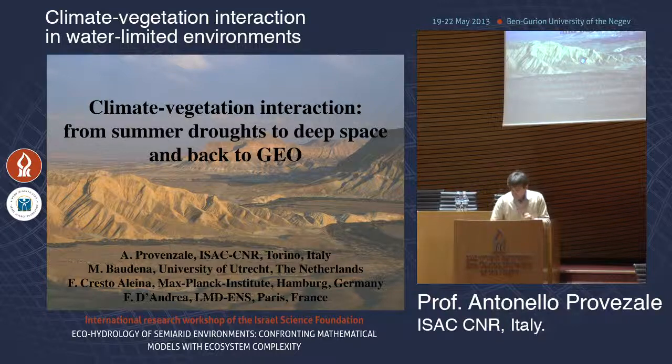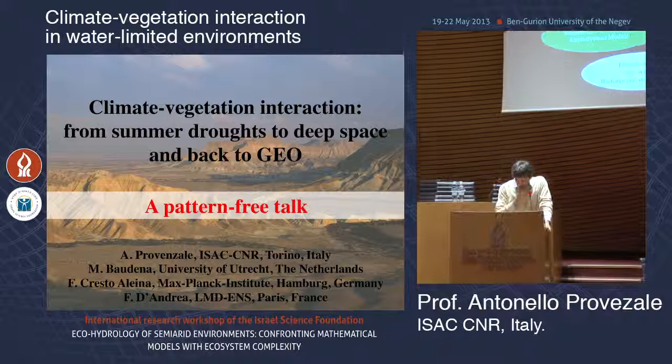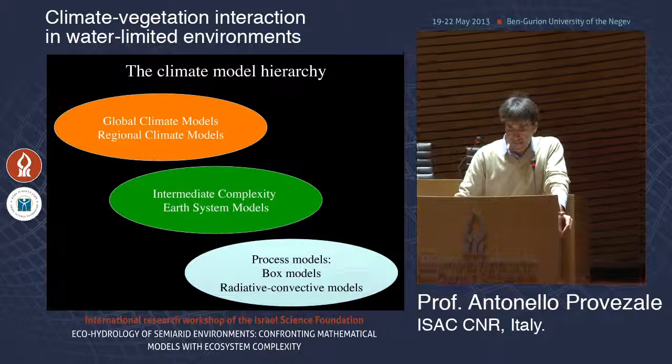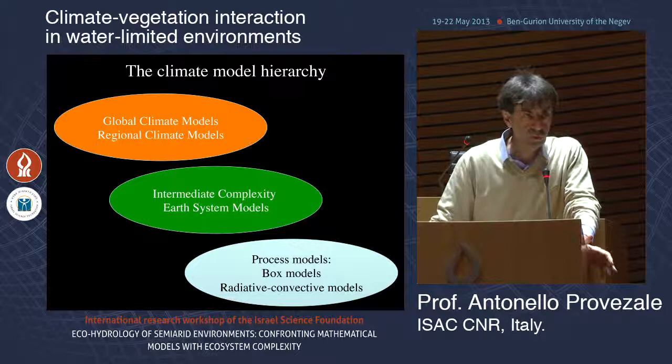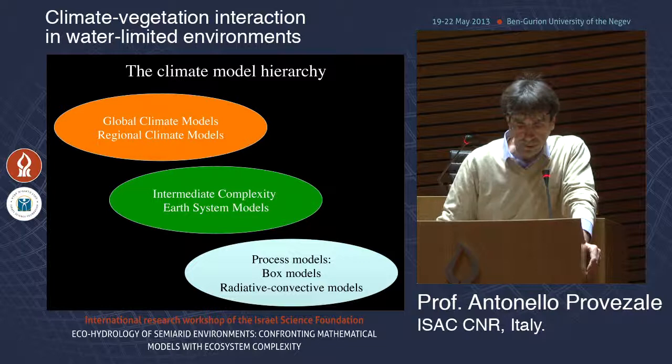This is a pattern-free talk. When you try to model the interaction between vegetation and climate, you have a lot of choices. The usual standard choice is to use global or regional climate models in which there is vegetation. These are very complex and don't necessarily always provide clear answers, so there is a hierarchy of models.